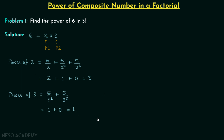We are done with step number 2. Now in step number 3 we need to compare 3 and 1. Since 1 is smaller and 3 is larger, the highest power of composite number 6 in 5 factorial will be equal to the smaller power, not the larger. So the highest power of 6 in 5 factorial is equal to 1.